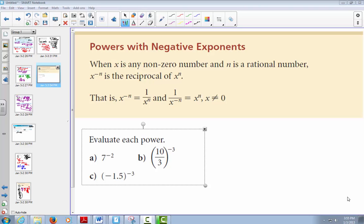When x is any non-zero number and n is a rational number and I have a negative exponent, I get the reciprocal. So 2 to the negative 1 is equal to 1 half. But then 1 half to the negative 1 is equal to 2.